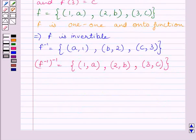But we can clearly see this set of ordered pairs is equal to the set of ordered pairs of f. So inverse of f inverse is equal to f. This is our required answer.